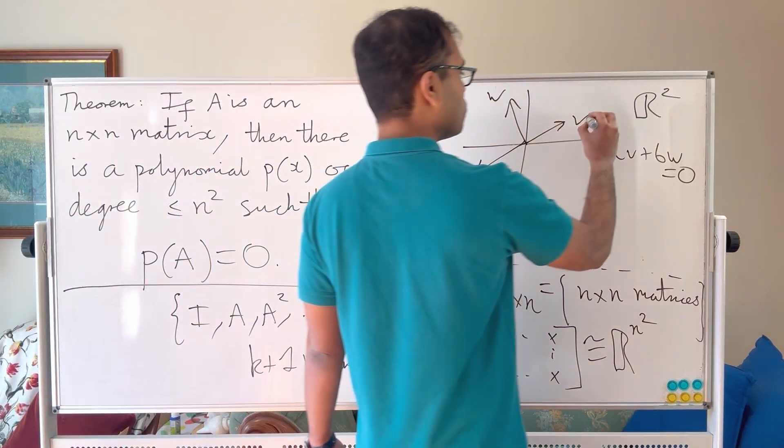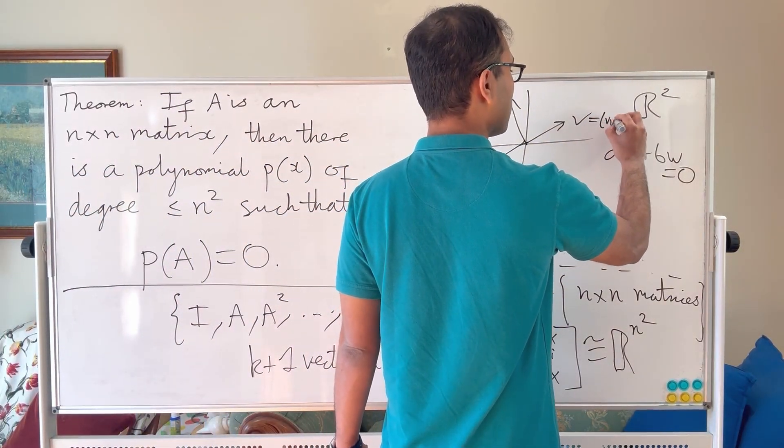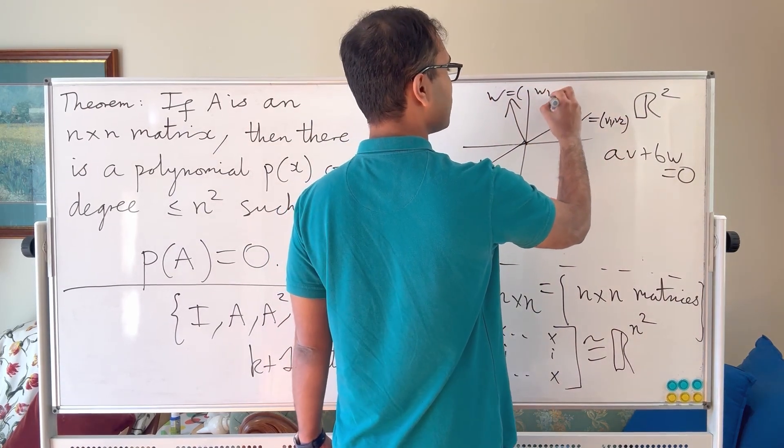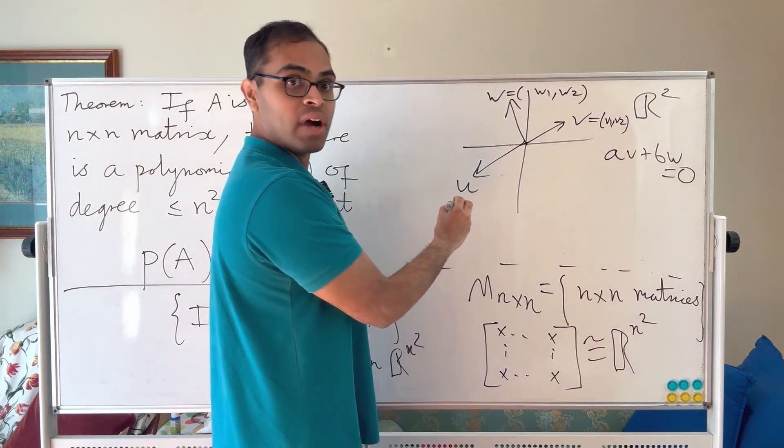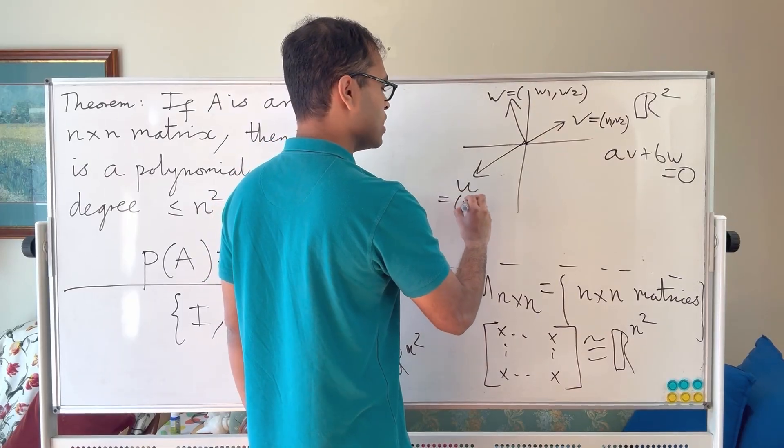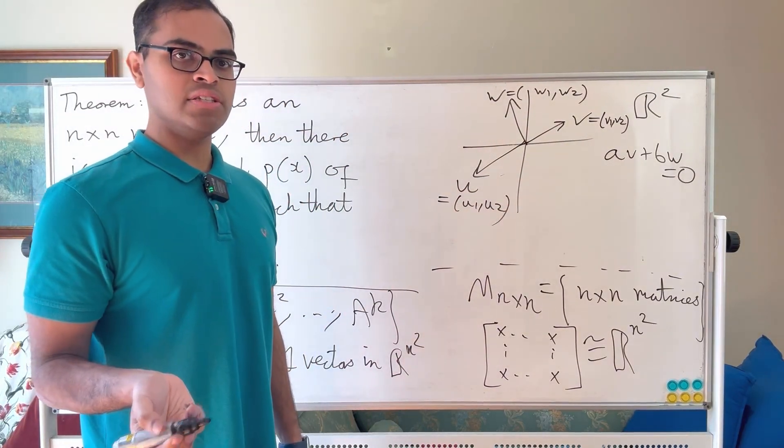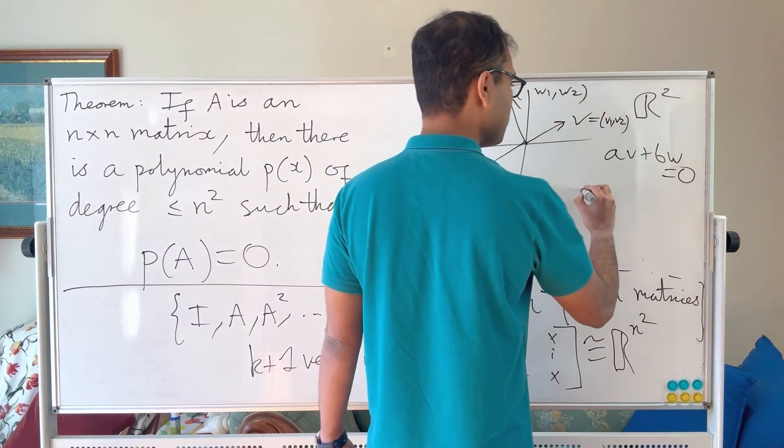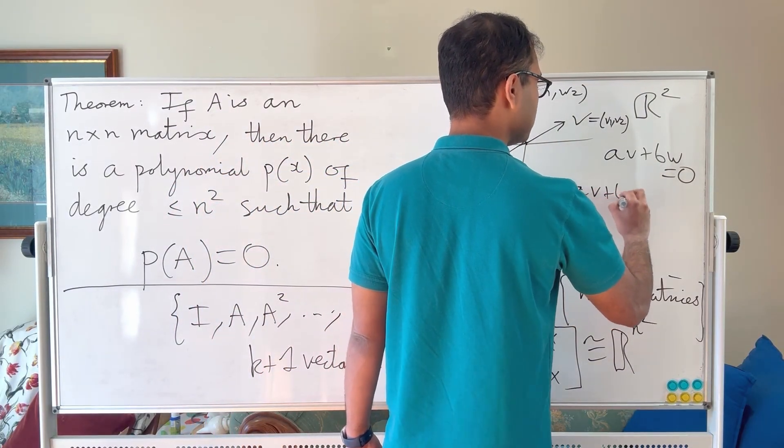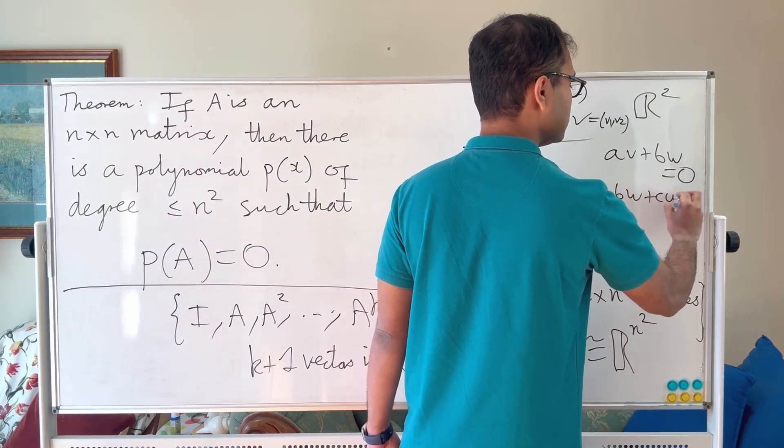Well, if you think about the coordinates of v, v has two coordinates v1, v2, w has two coordinates w1, w2, and u has two coordinates u1, u2. So if you think about what a relationship between these three vectors is, if you think about a relation like a v plus b w plus c u equals 0, that can be represented by a system of two equations in three variables.